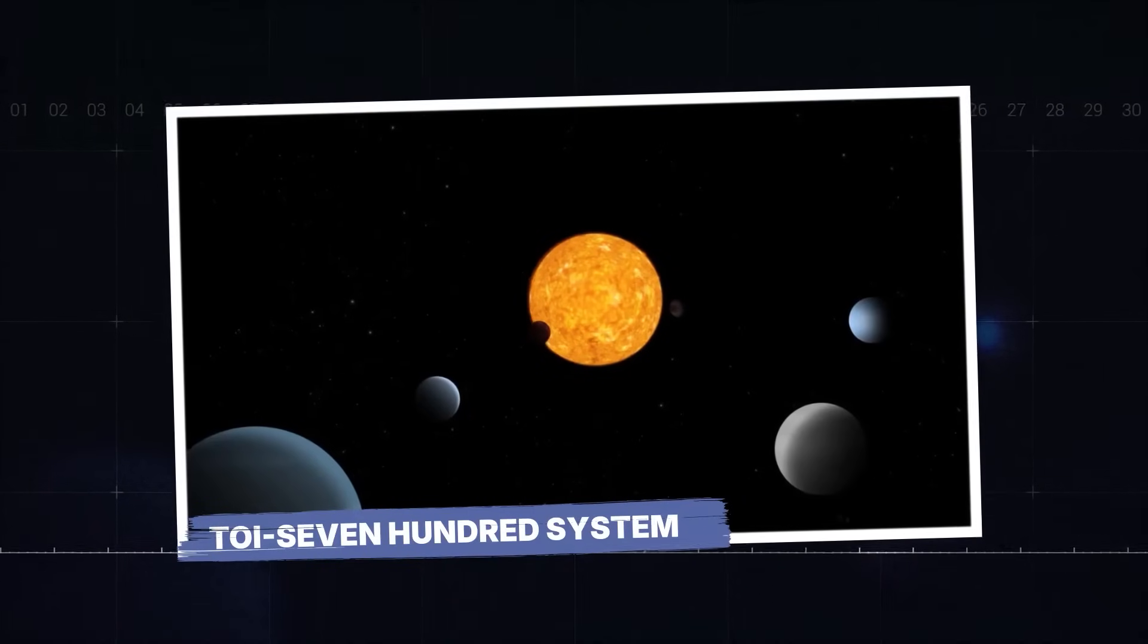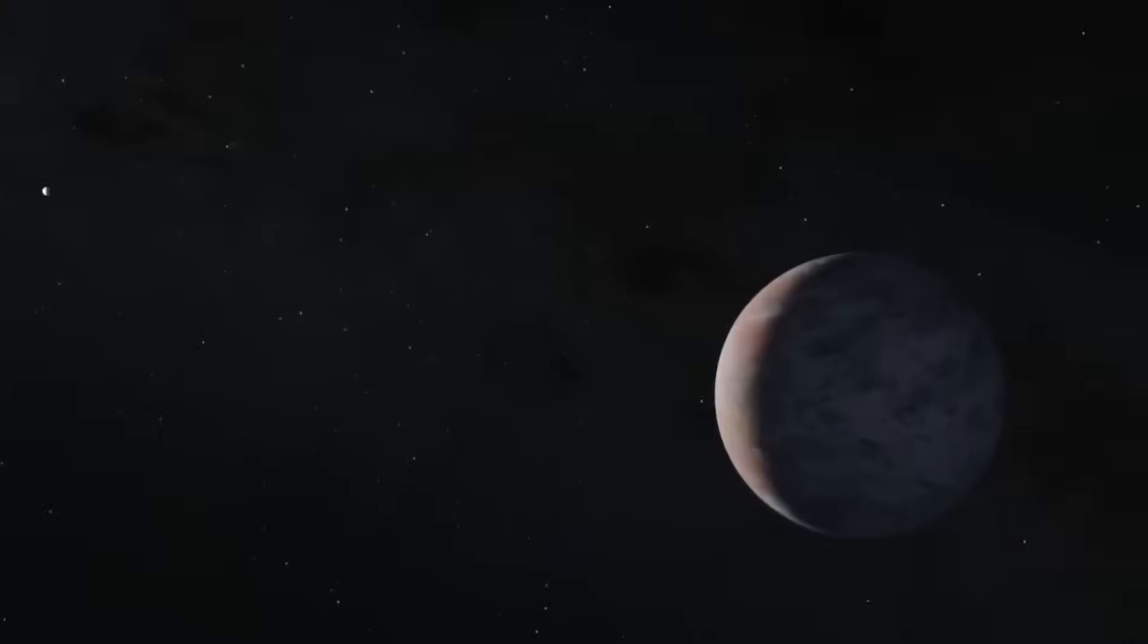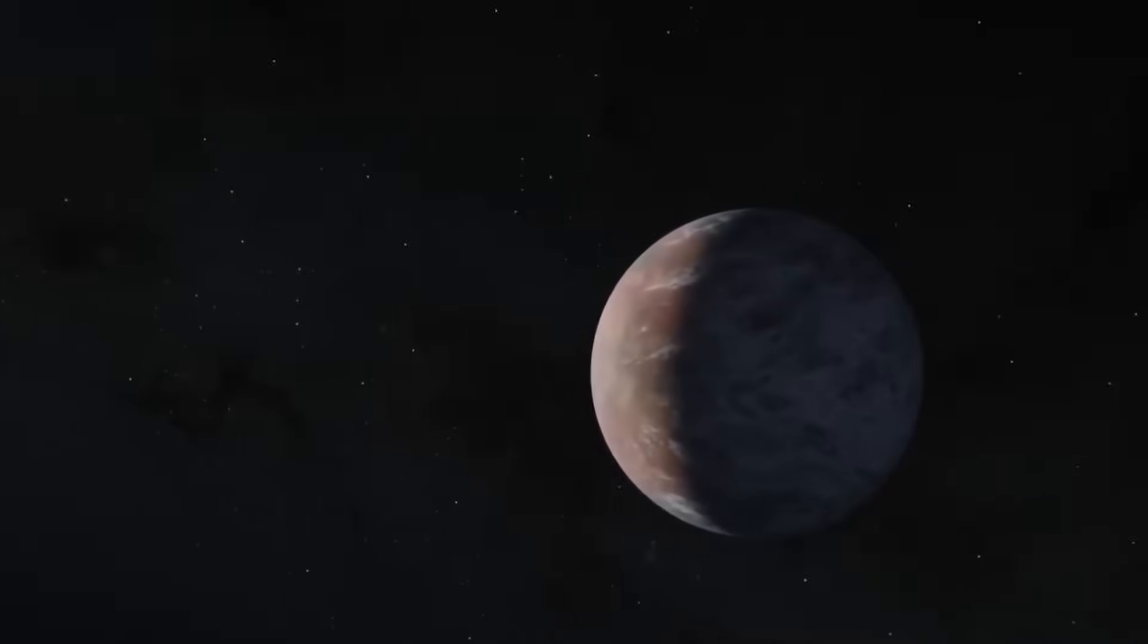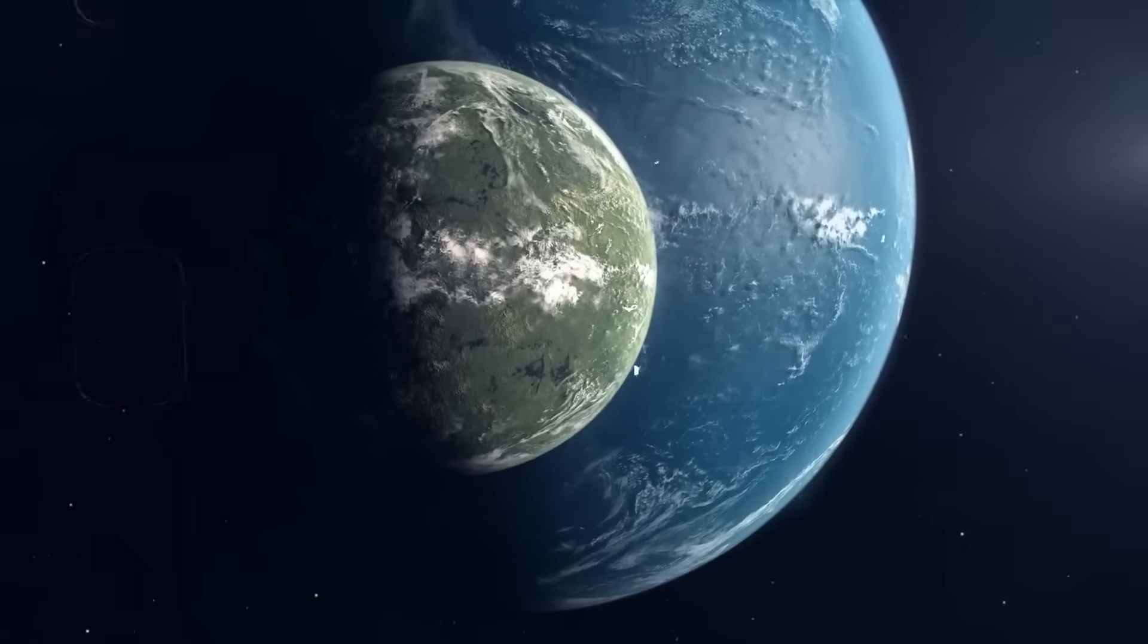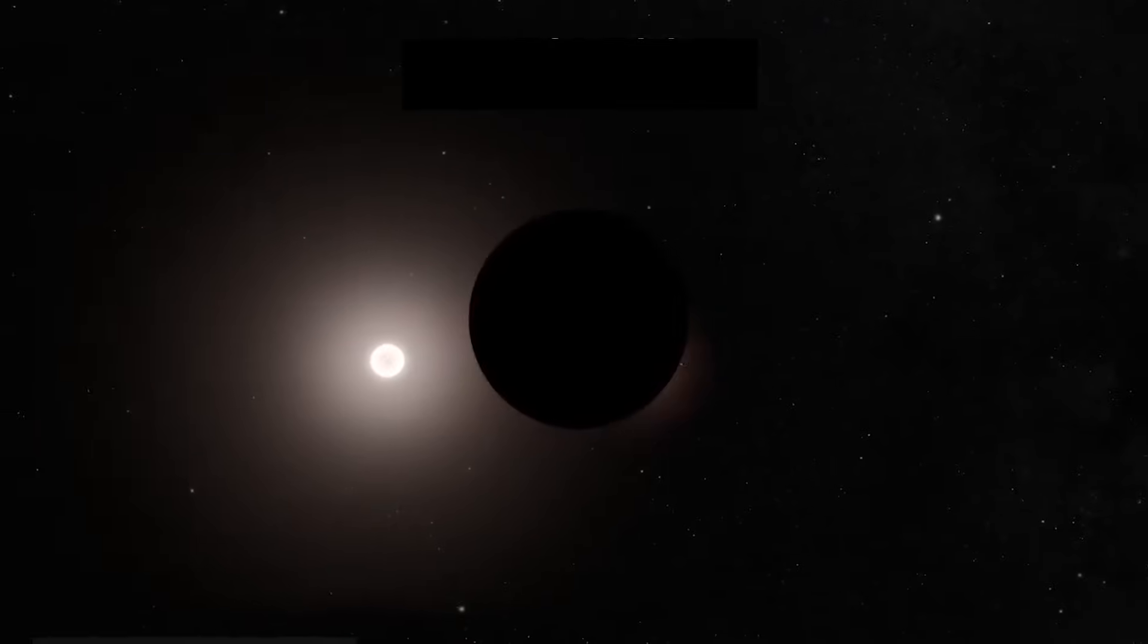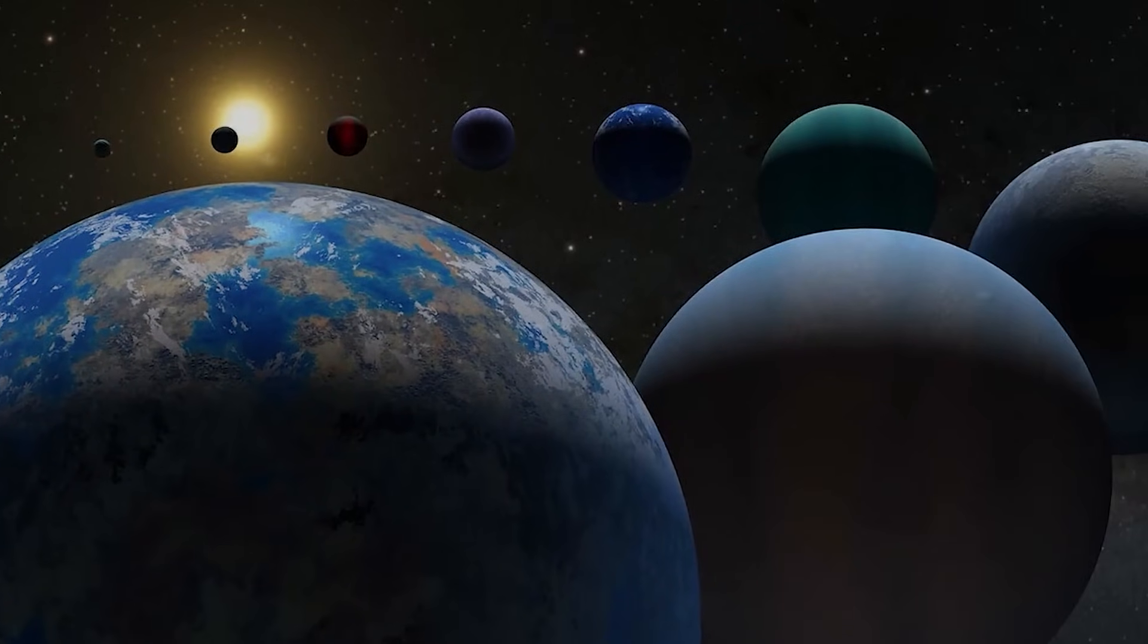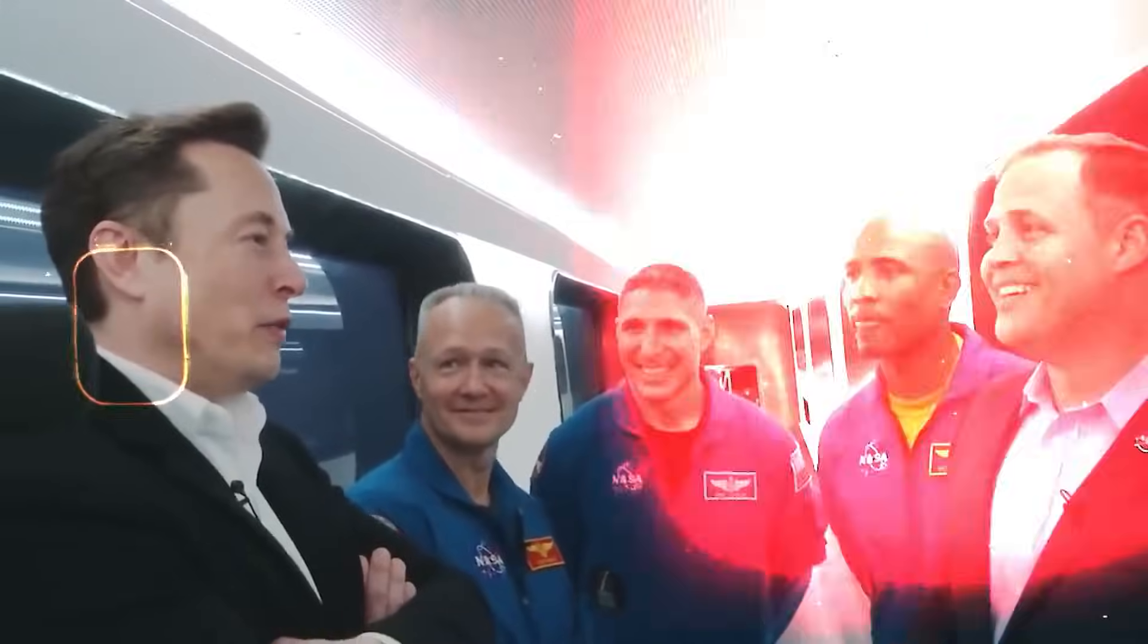TOI-700 system. Just when scientists thought finding one potentially habitable planet was rare, the TOI-700 system flipped the script, revealing not one but multiple Earth-sized worlds in the habitable zone of a single star. Located about 100 light-years away in the Dorado constellation, this system has become a major highlight in NASA's hunt for life-supporting exoplanets.